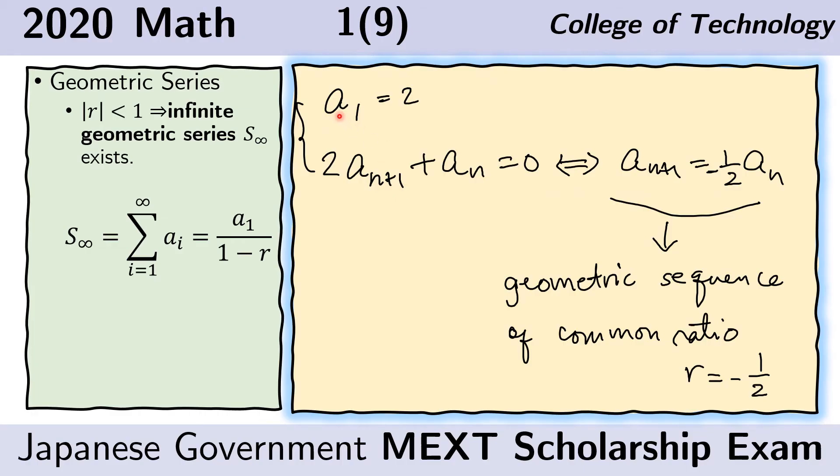Let us now rewrite the given. Again, the first term is already given to be 2. Now, if we rewrite this second given so that on this side we have a sub n plus 1,